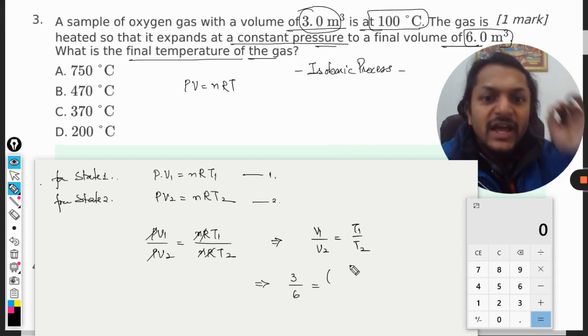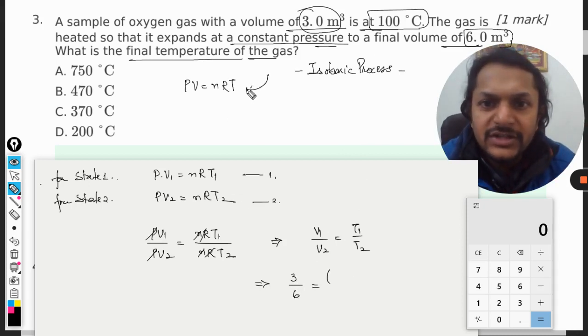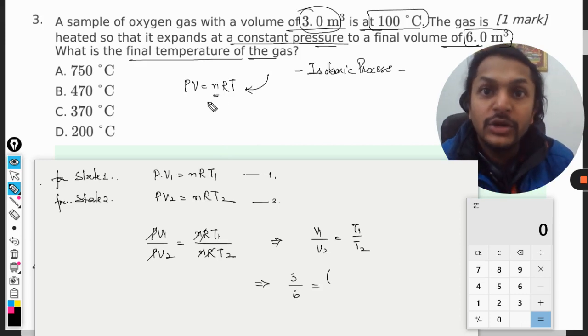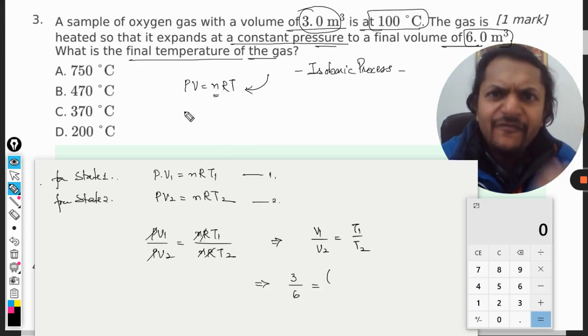The initial temperature - now temperature has to be taken in absolute terms always. You see, in this equation there is n which is number of moles, written in small letters. Every other thing is written in capital letters. Why? Because they are always taken in absolute terms.